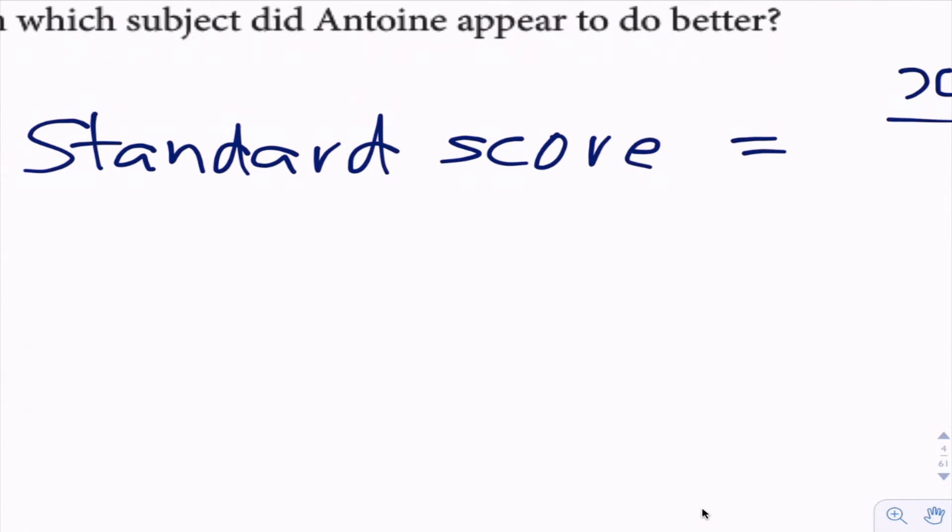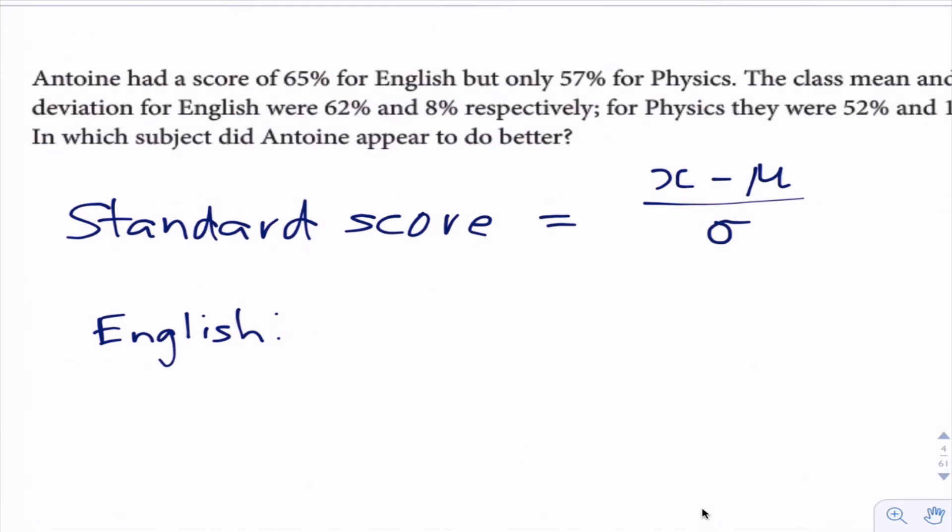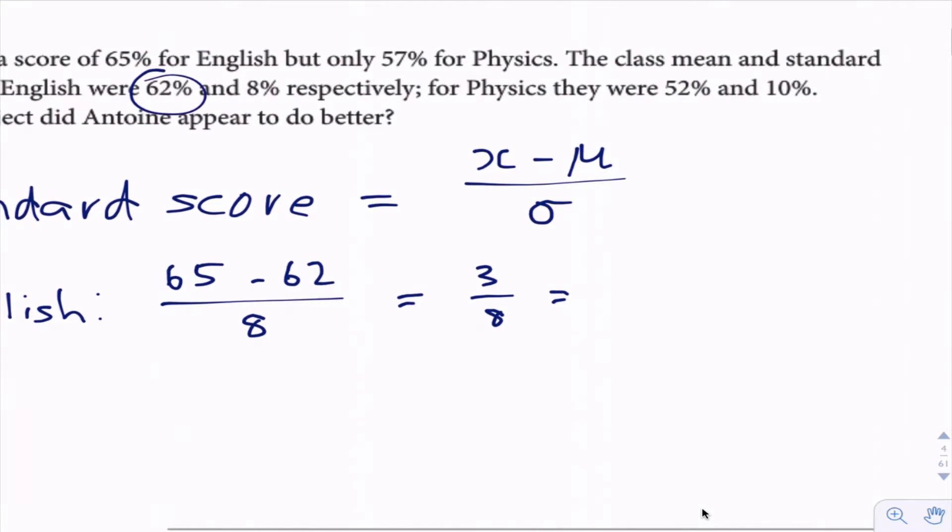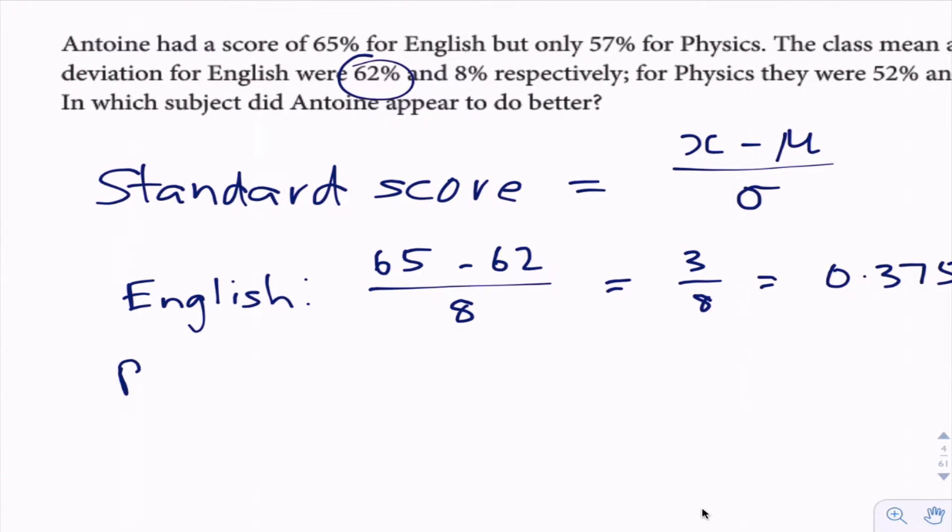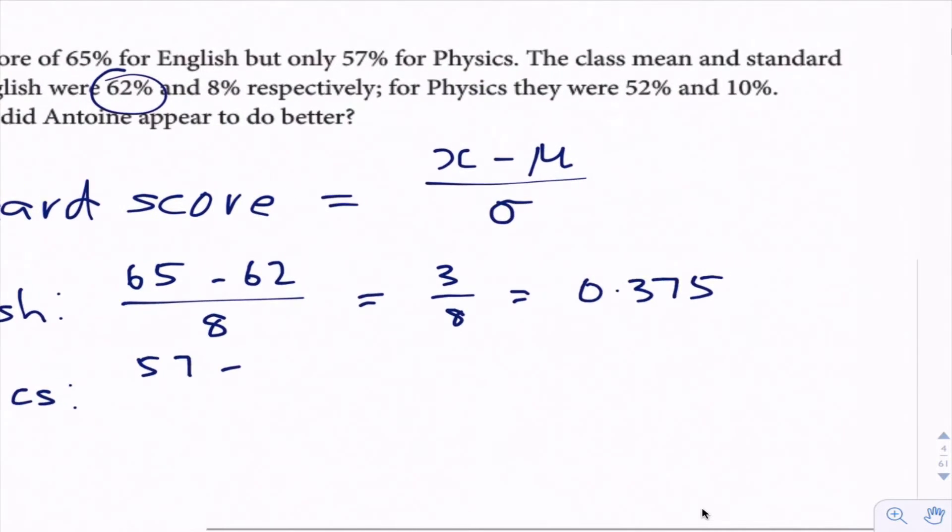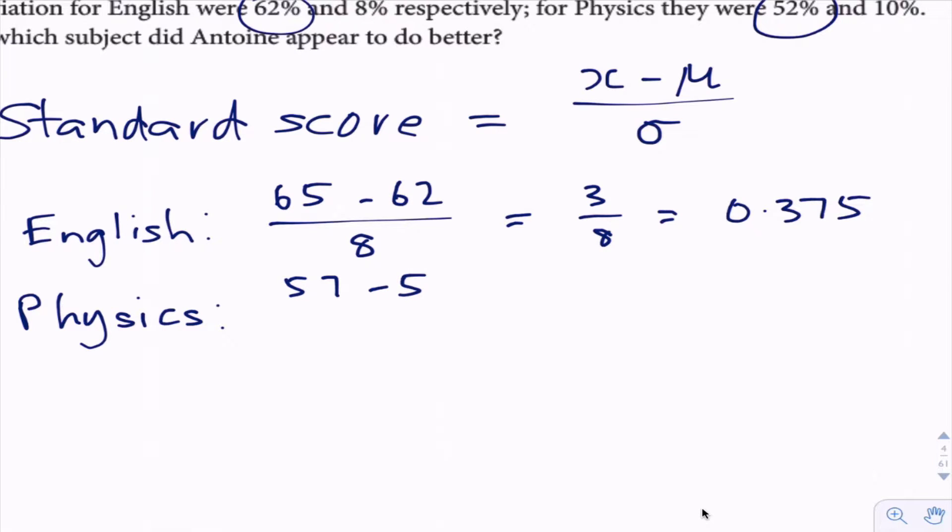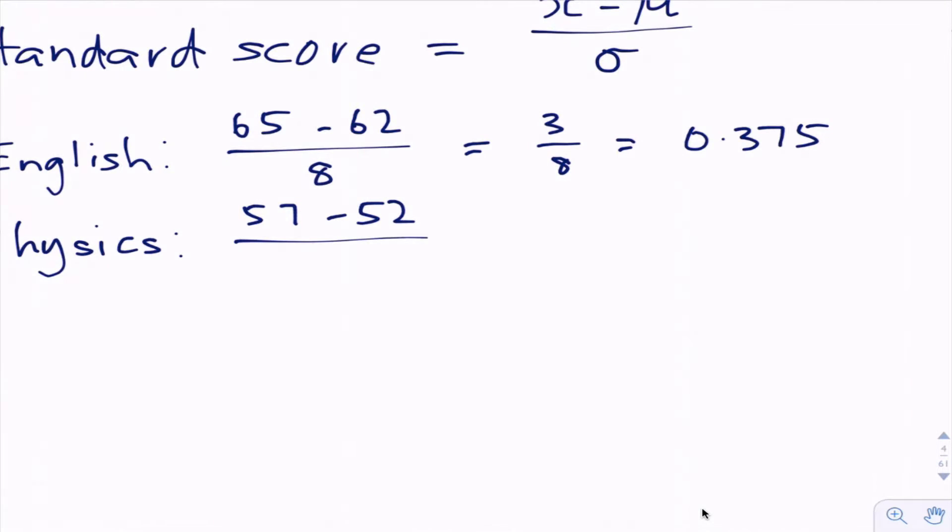Let's look at this for English. The standard score for English: he had a score of 65, the mean for English was 62, and the standard deviation was 8. So 3 over 8 is his standard score or 0.375. Now let's look at physics. His score was 57% for physics, the mean was 52%, and the standard deviation was 10%. So 57 minus 52 is 5 over 10, which is 0.5.